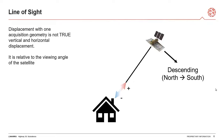Here's what I mean by satellite line of sight. Displacement with one acquisition geometry is not true vertical and horizontal movement — it is relative to the way the satellite is looking at the ground. So for this example, if we have positive movement, that would be towards the satellite, and if we have negative movement, it would be away from the satellite. It is not up and down.